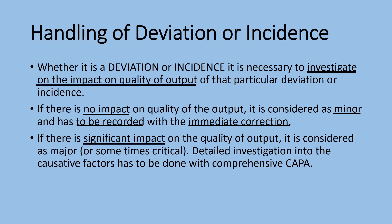If there is a significant impact on the quality of output, it is considered as major or sometimes critical. Detailed investigation into the causative factors has to be done with comprehensive CAPA. Comprehensive CAPA means looking into the system procedure for any modifications required to address the deviation. Training for every deviation is not the correct approach. Training should be given only when there is evidence that the operator could not do the job correctly.